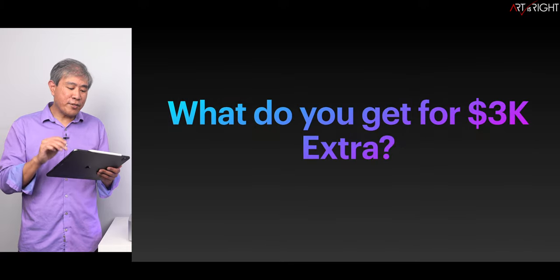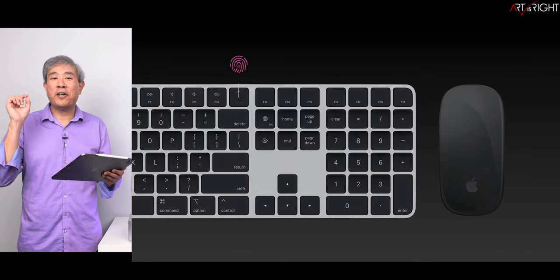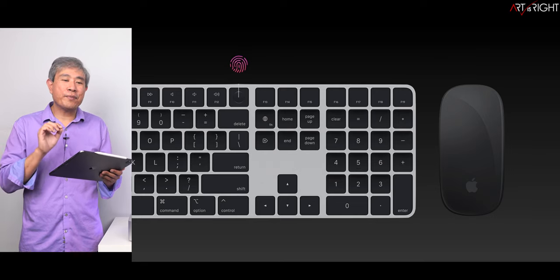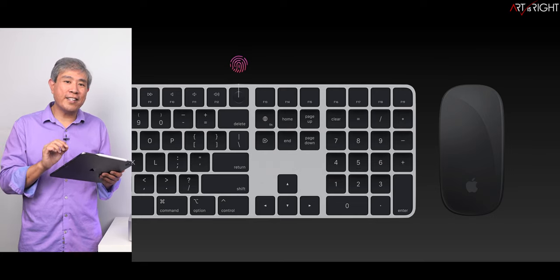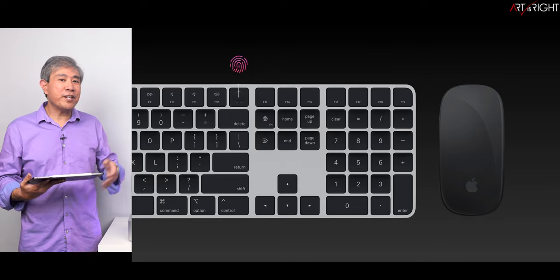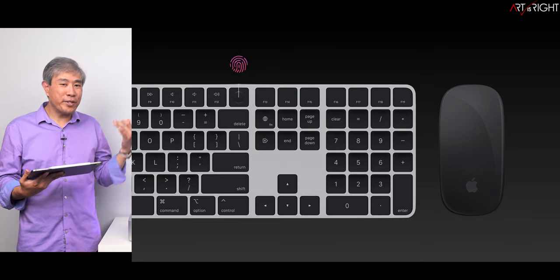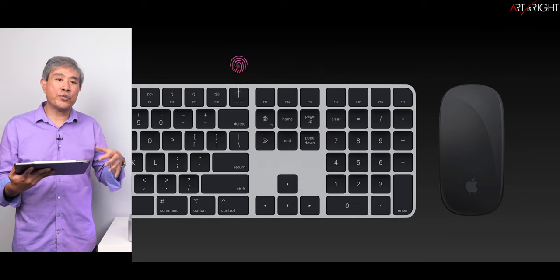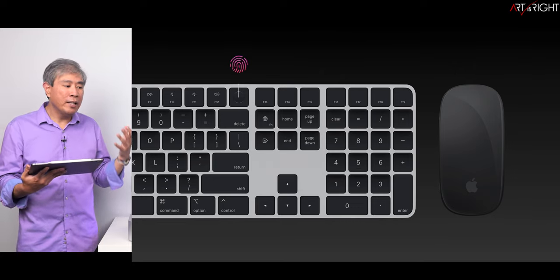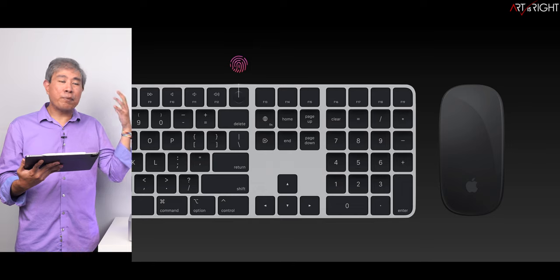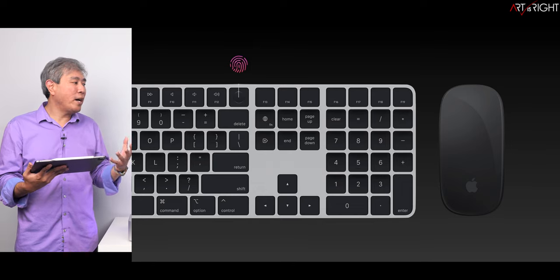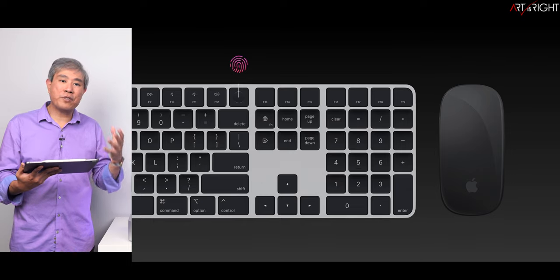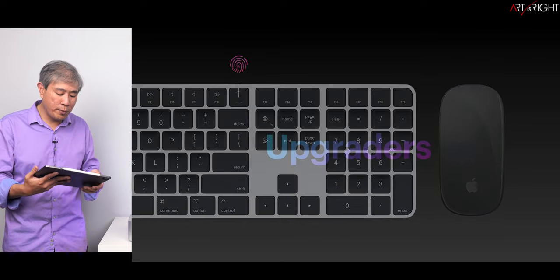What you do get with the extra $3,000 is that the Mac Pro includes the mouse and keyboard with Touch ID as standard. So if internal storage and having those accessories is important to you, that would be the way to go. But I jokingly say: if you need the internal storage the Mac Pro is definitely the way to go, but at the $3,000 performance delta, I think I'm actually going to be much happier with the Mac Studio — and I would say that for most photographers as well.